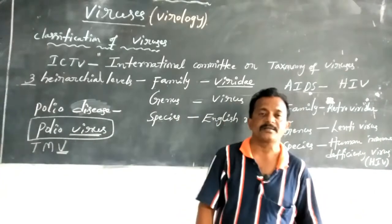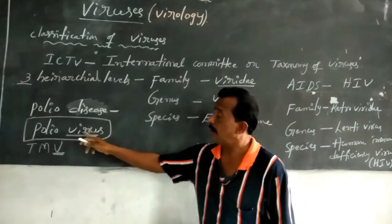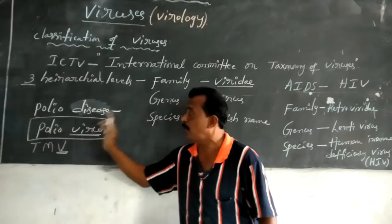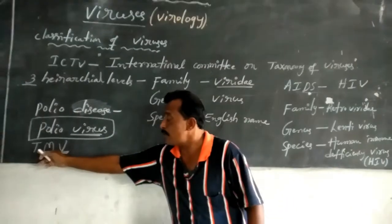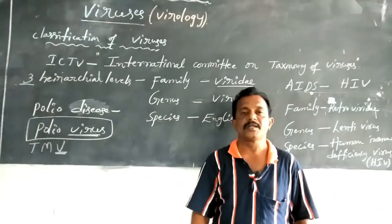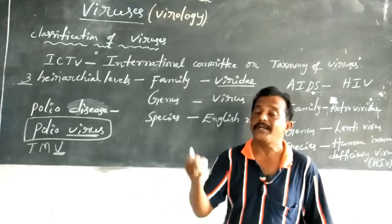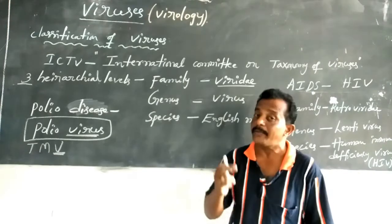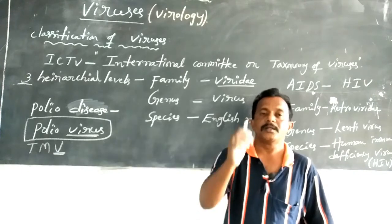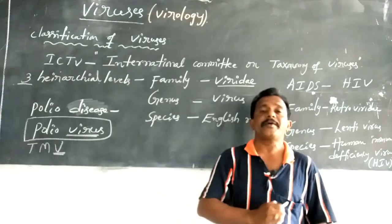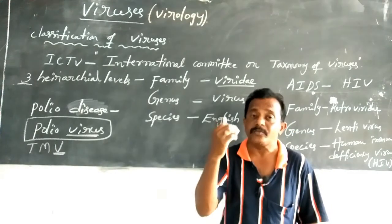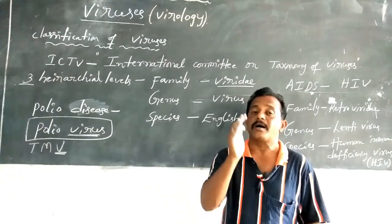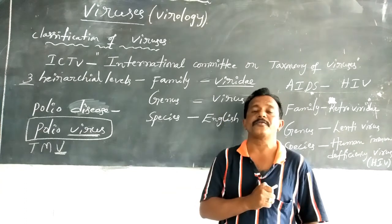Viruses are named after the disease they cause. Polio disease is caused by poliovirus. Tobacco mosaic disease is caused by Tobacco Mosaic Virus. AIDS — Acquired Immunodeficiency Syndrome — is caused by HIV, Human Immunodeficiency Virus. Common cold disease is caused by rhinovirus. Cancer disease is caused by oncogenic viruses. That is the importance of the ICTV system.